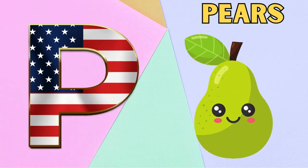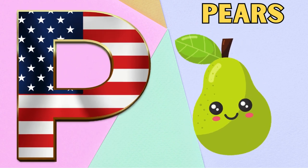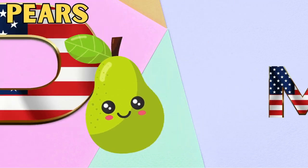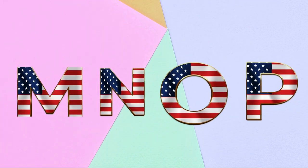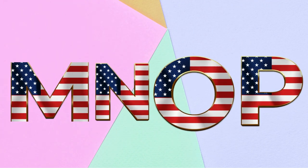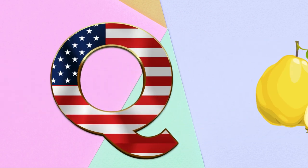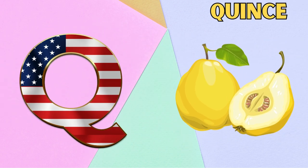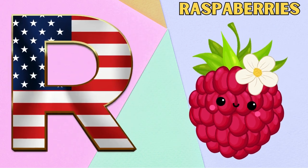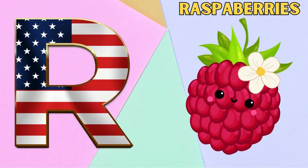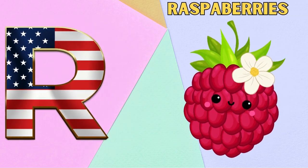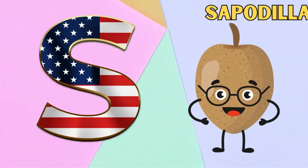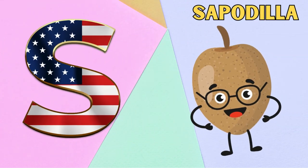P is for Pears. P, P. Pears. Q is for Quince. Q, Q. Quince. R is for Raspberries. R, R. Raspberries.